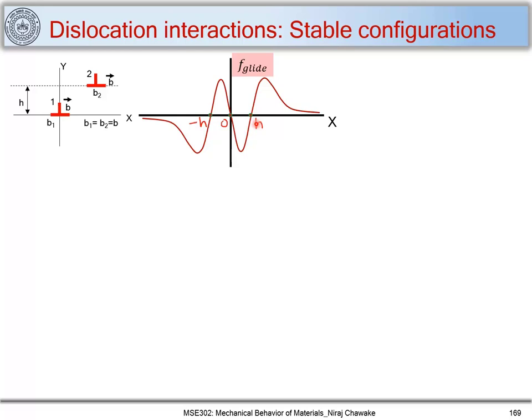Let's consider the position x equal to h and try to find out the stability by perturbing this dislocation by plus or minus delta x. At x equal to h, the glide force is zero. When I perturb this dislocation by plus delta x, the glide force is positive, and thus it will make this dislocation move away from position h in the positive x direction.